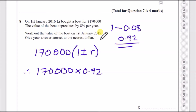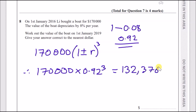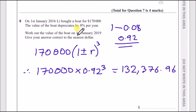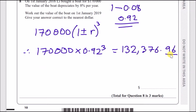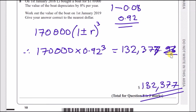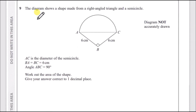We need the value on 1st January 2019 — that's three years from 2016 — so we raise 0.92 to the power of three. Putting 170,000 × 0.92³ into the calculator gives $132,376.96. Rounded to the nearest dollar, since .96 rounds up, the answer is $132,377.